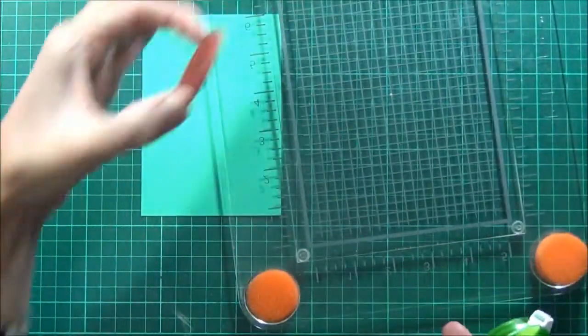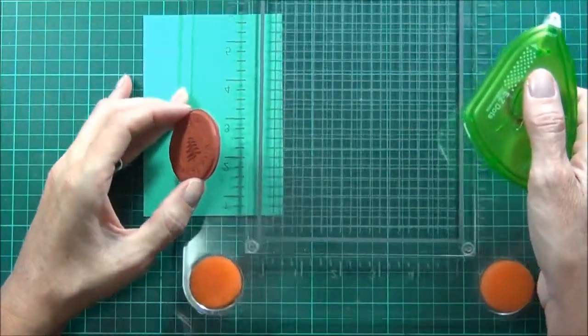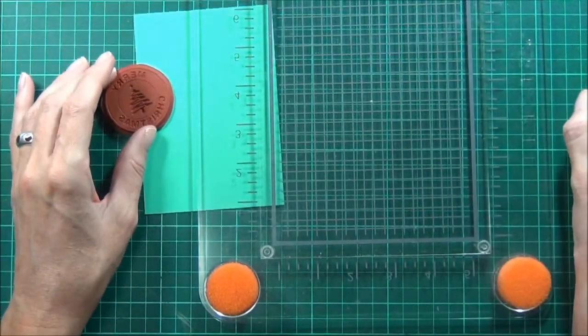Hi, it's Therese from Lost in Paper and I'm back using this fabulous stamp from Purple Onion Designs called Merry Christmas, and it's one of their logo stamps.